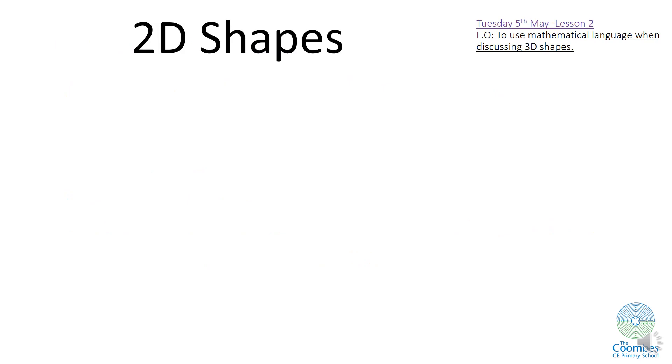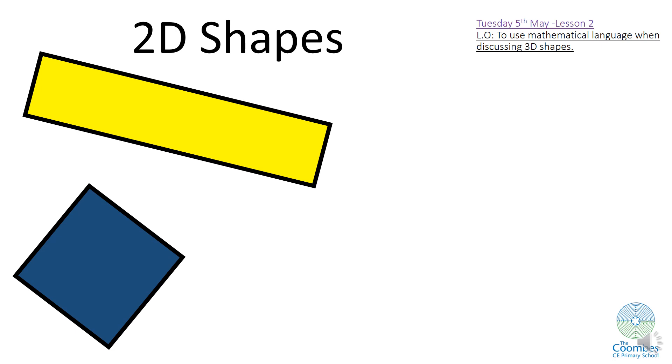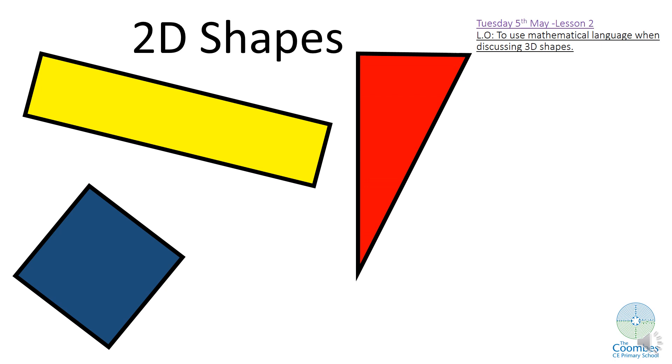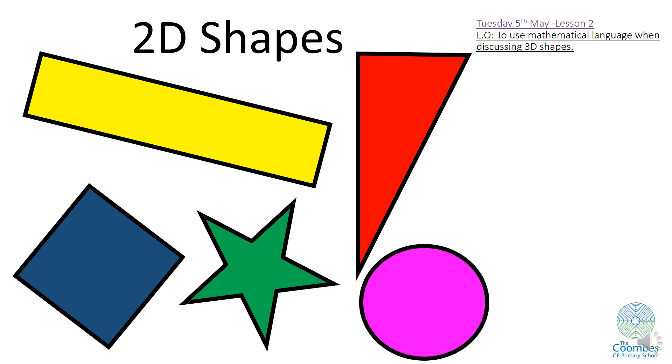Right then, 2D shapes, let's just remind ourselves what they are. We've got this one which is a rectangle, fantastic. This one, a square, well done. Even though it's on its side, it is still a square because it's got four straight sides and they're all the same length. This is a triangle, brilliant, because it's got three straight sides and three vertices. This is a star, and this shape is a circle.